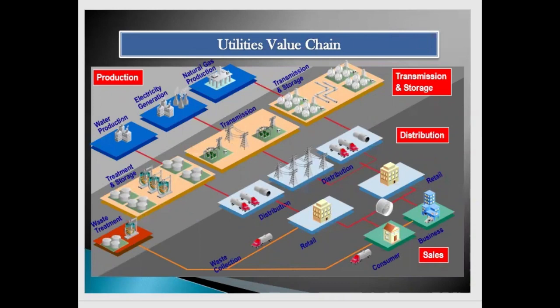All these utility segments have a value chain that starts with production. If we consider electricity, there is a unit where we generate energy — called the production or generation unit. Once we generate the energy, we need to transport it to the distribution segment through a transmission unit. So generation happens, then it is transmitted, then it comes to the distribution unit. Once available at the distribution unit, it is sold to retailers, and retailers sell it to consumers.